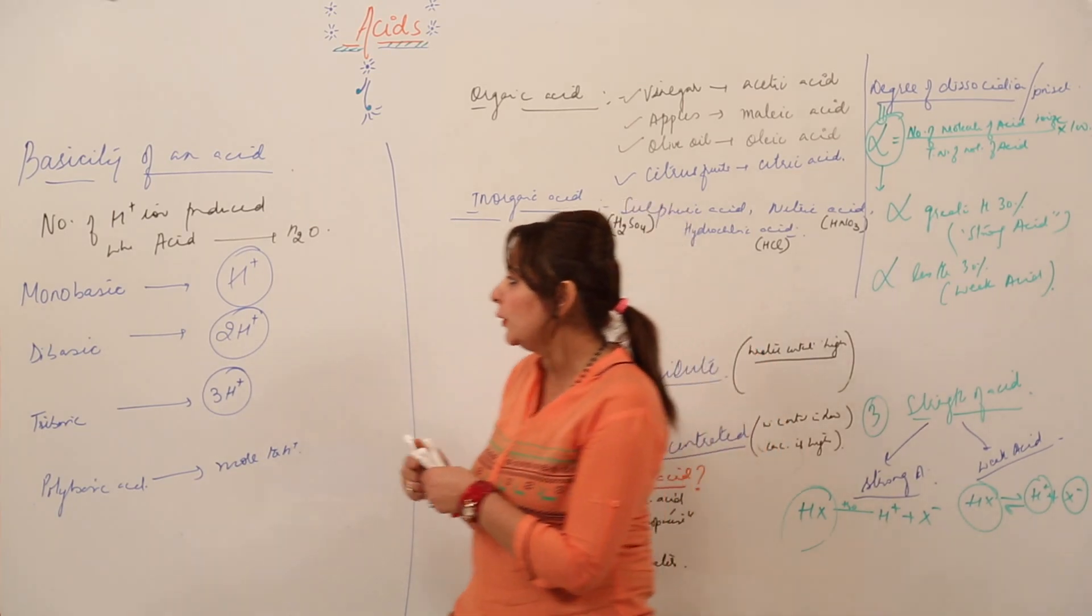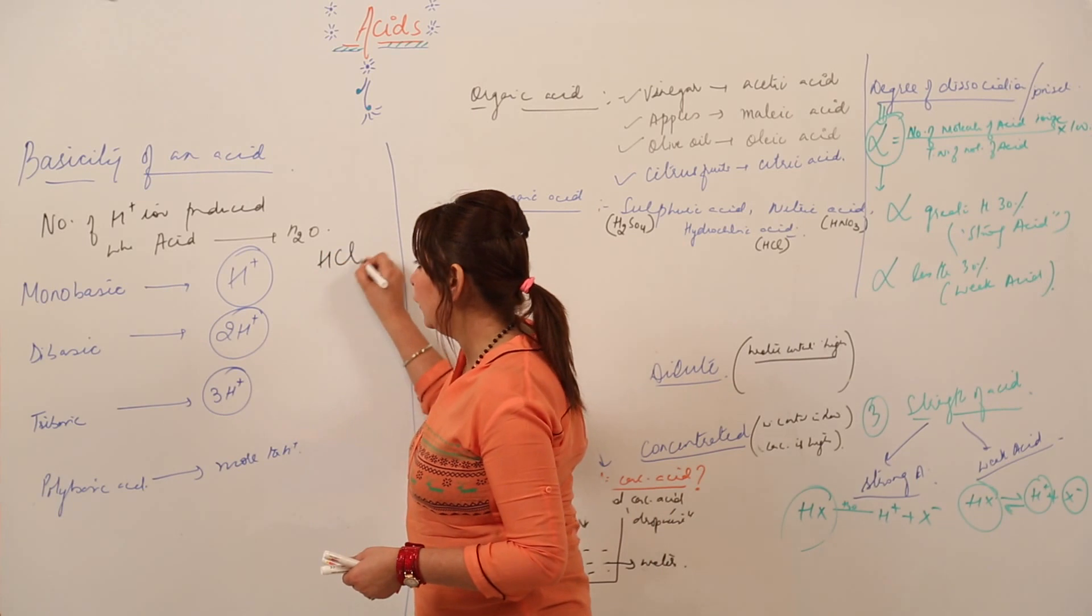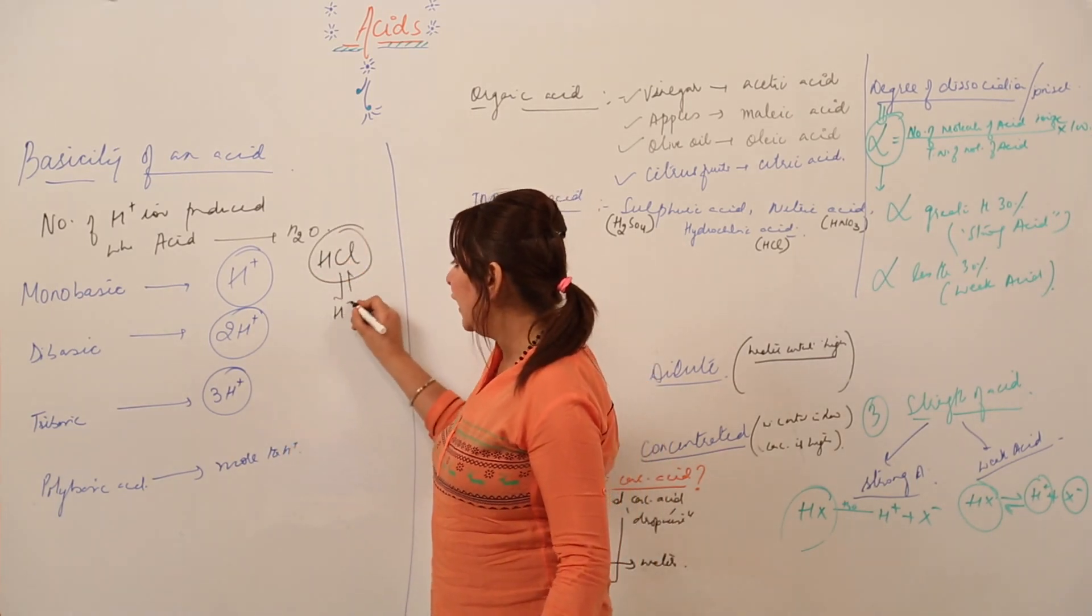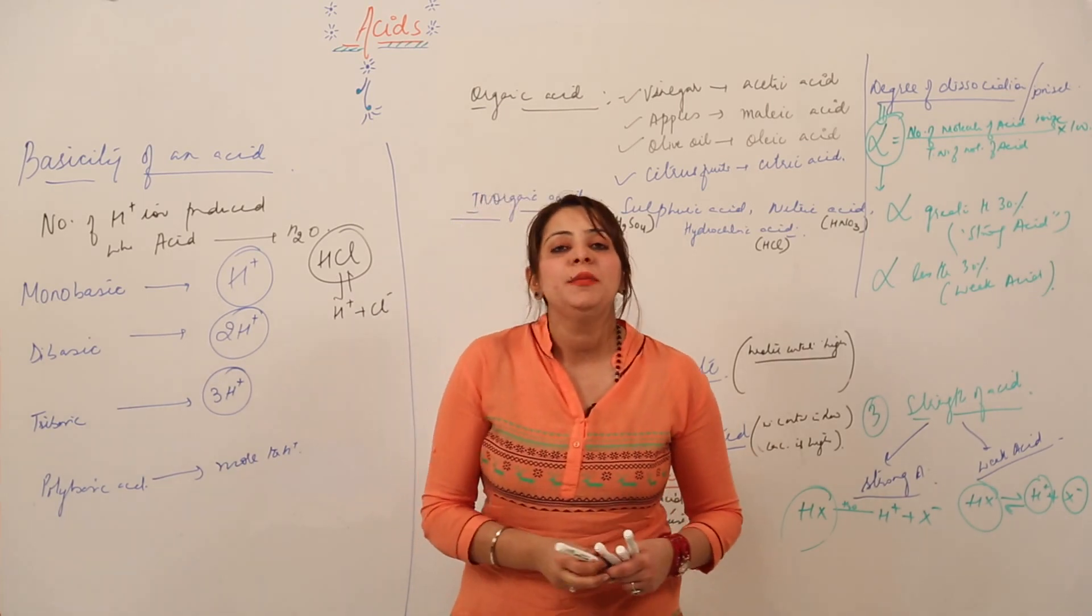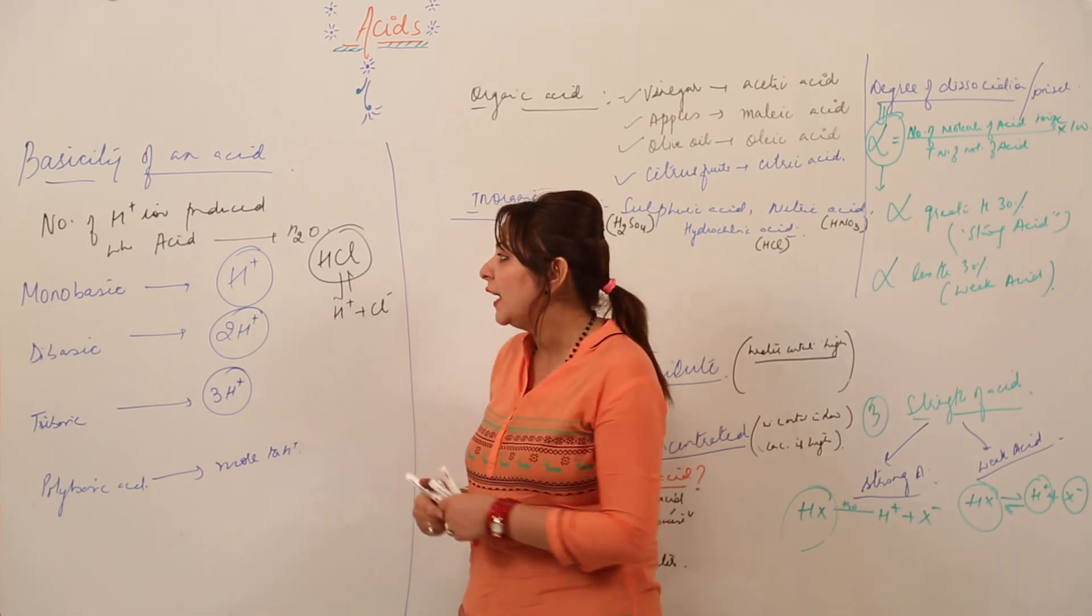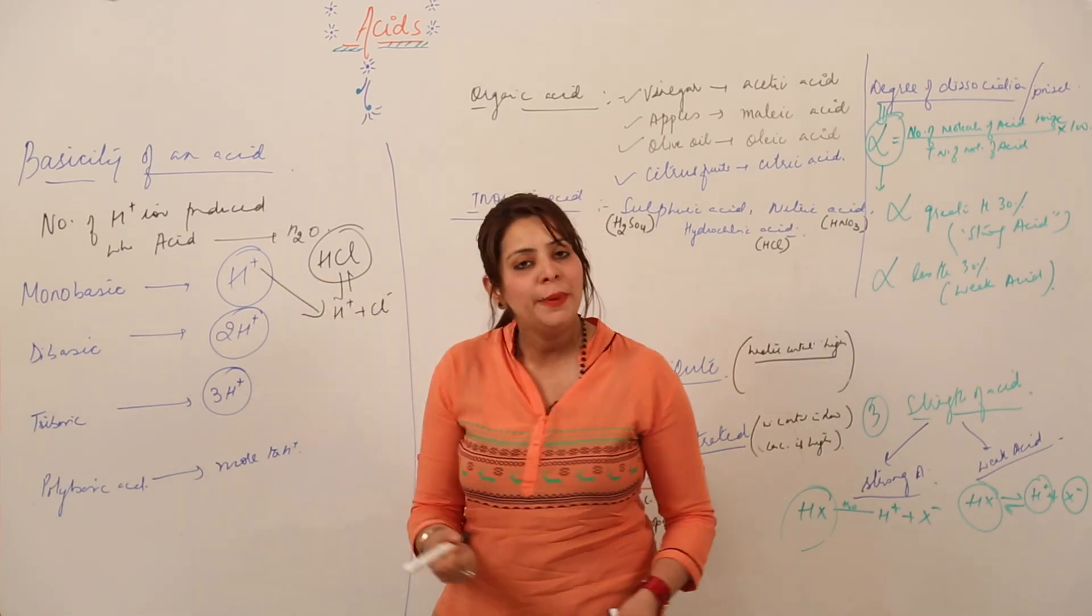We have HCl. When I dissolve this HCl in water, I get one H ion and one Cl negative. That means HCl is going to produce one H ion, so it is an example of mono basic.